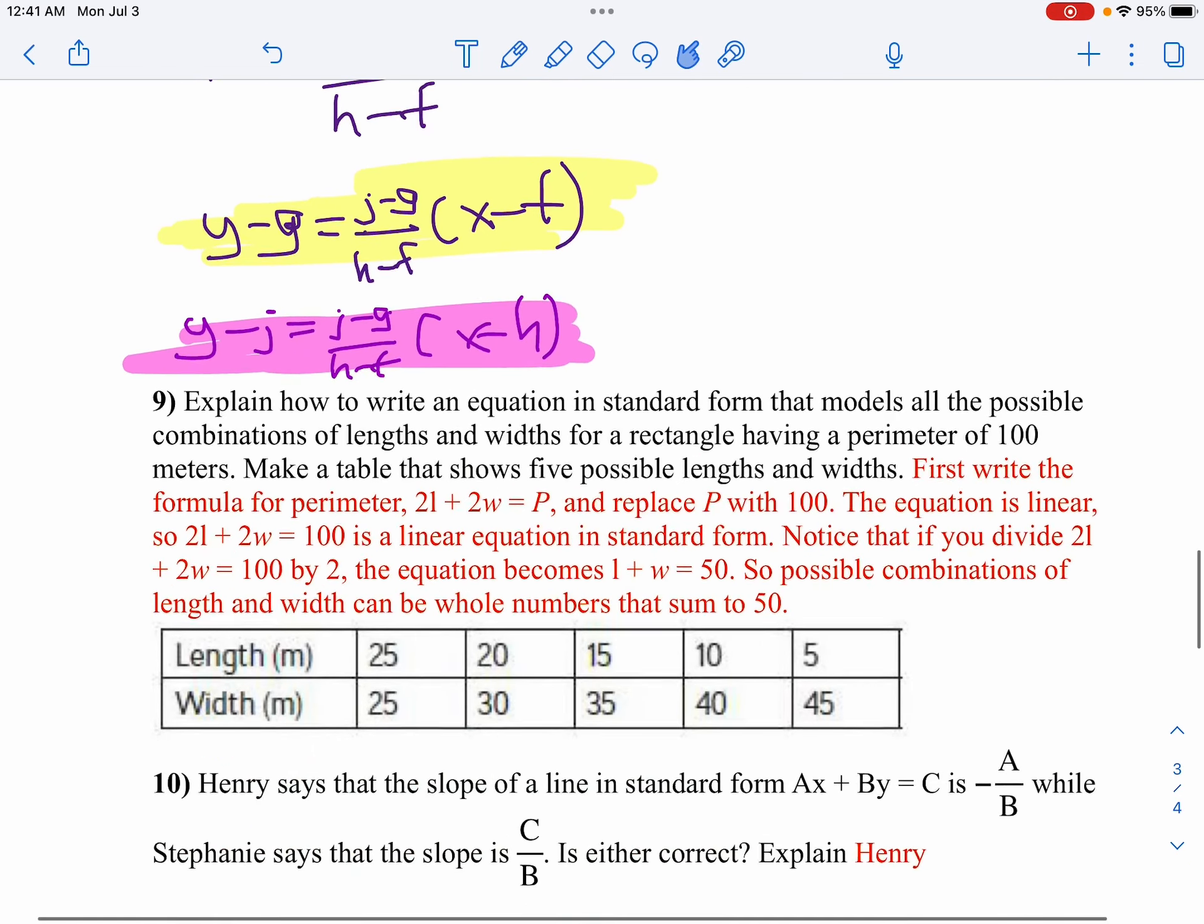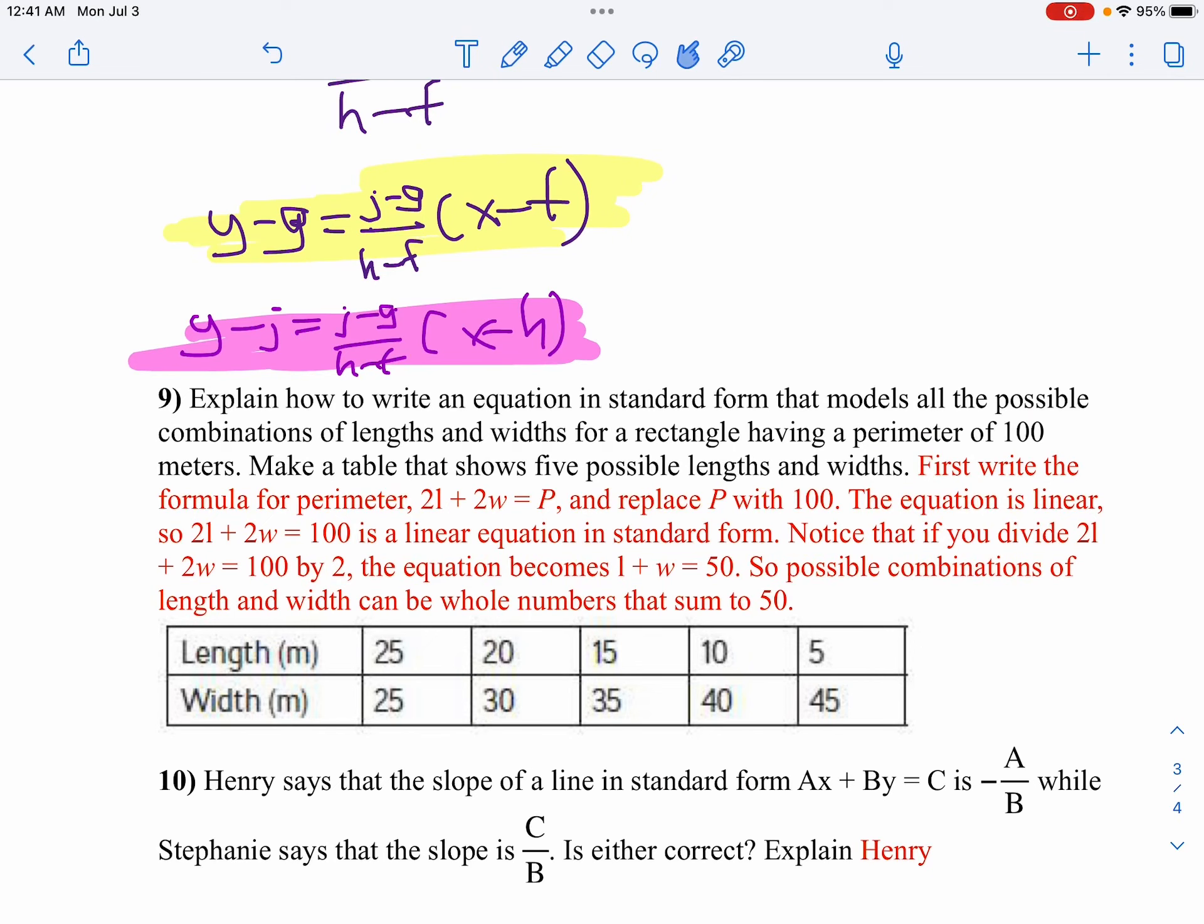On question number nine, you should have something about first write the formula for the perimeter and then replace P with 100. So you've got 2l plus 2w equals 100. Well, that's a linear equation in standard form. Notice that if you divide 2l plus 2w equals 100 by 2, I'd get l plus w equals 50.